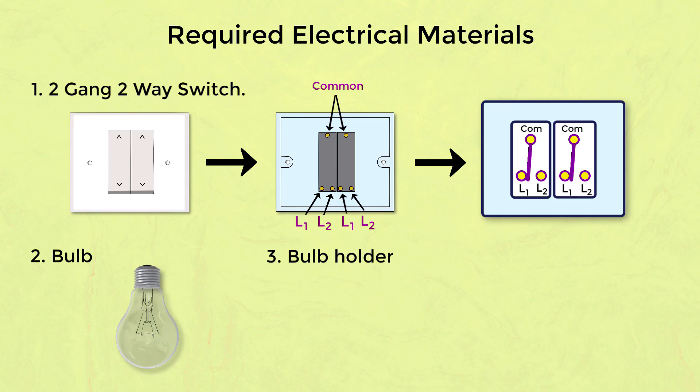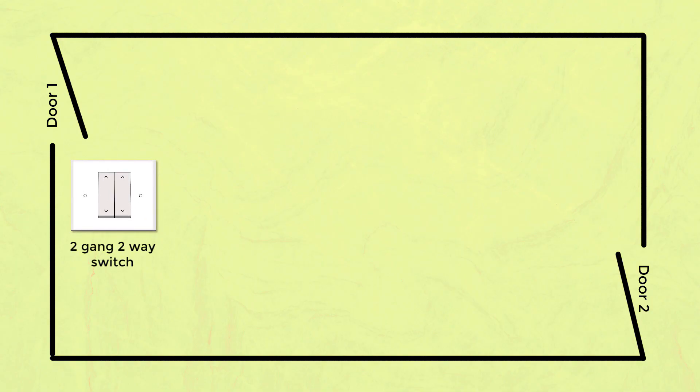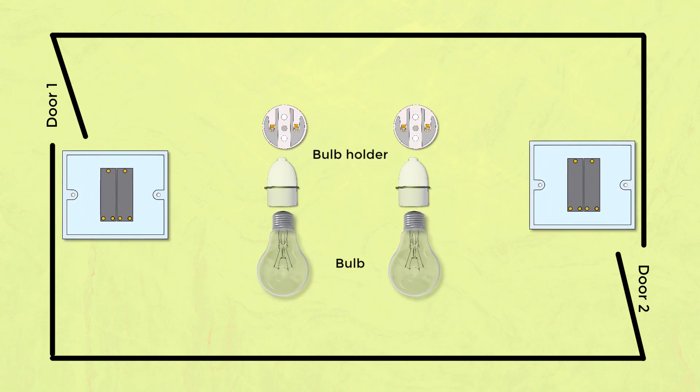A bulb and a holder. Let's do the wiring. This is our room inside which we will be doing the connections - two gang two-way switches and the required bulbs with holders. Now we will do the connection.